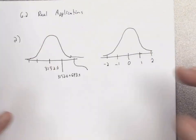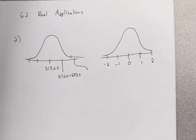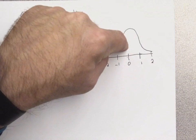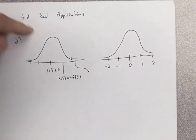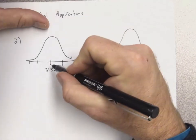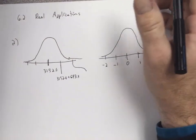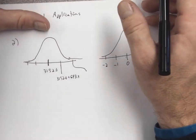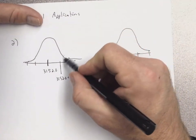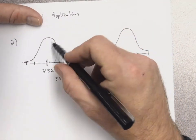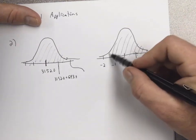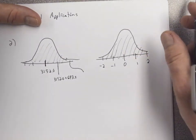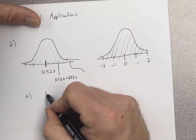These two curves — the normal and standard normal — have the same shape and the same area. We use the standard normal to find probabilities for the other curve. The mean is right in the center. The first question asks: what's the area under this curve? The area under both curves is the same — they're both equal to one.